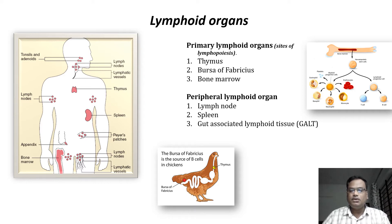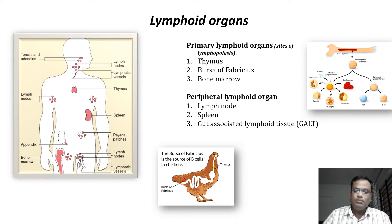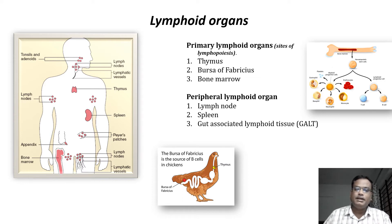Before we understand humoral and cell mediated immunity, let us familiarize ourselves with the lymphoid organs present in our body. Like other organ systems, we have an immune system made up of organs called lymphoid organs. These are divided into two types: primary lymphoid organs and peripheral or secondary lymphoid organs. The primary lymphoid organs are thymus, bursa of Fabricius, and bone marrow. Thymus and bone marrow are found in human beings, whereas the bursa of Fabricius is found in birds.